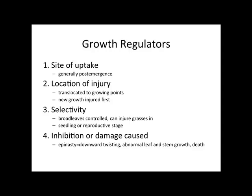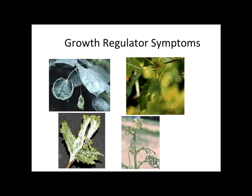How does a growth regulator kill a weed? They are generally post-emergent products. They're translocated to the growing point. New growth is injured first. The selectivity targets broad leaves for control. They can injure grasses in the reproductive stage. Inhibition or damage causes epinasty — the downward twisting or abnormal leaf and stem growth — which will eventually lead to the death of the overall plant.